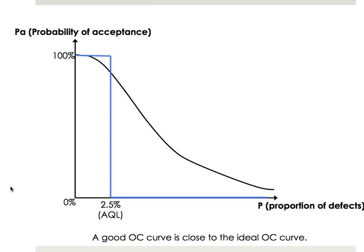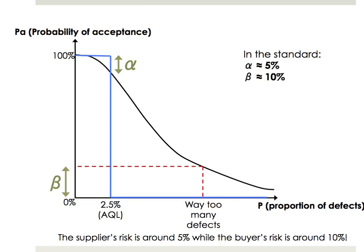And what does the standard look at when it decides the shape of that curve? It looks at the two risks we mentioned before — the alpha risk and the beta risk, the supplier's risk and the buyer's risk. One thing that's very important to know is that the standard sets the alpha risk at about 5% and the beta risk at about 10%. So the buyer's risk is about double the supplier's risk.